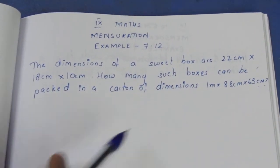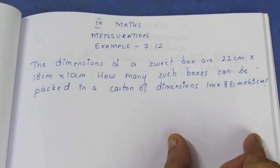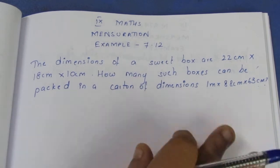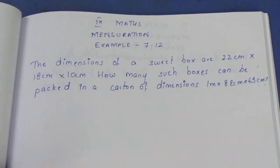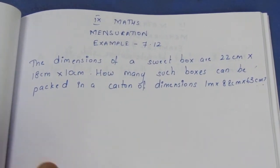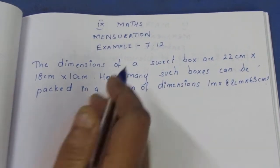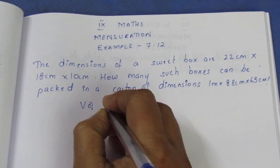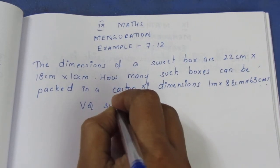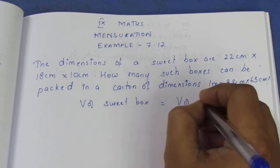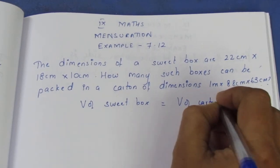Now, we have the sweet box. The relationship is: n × volume of sweet box = volume of carton. The volume of sweet box equals the volume needed in the carton.